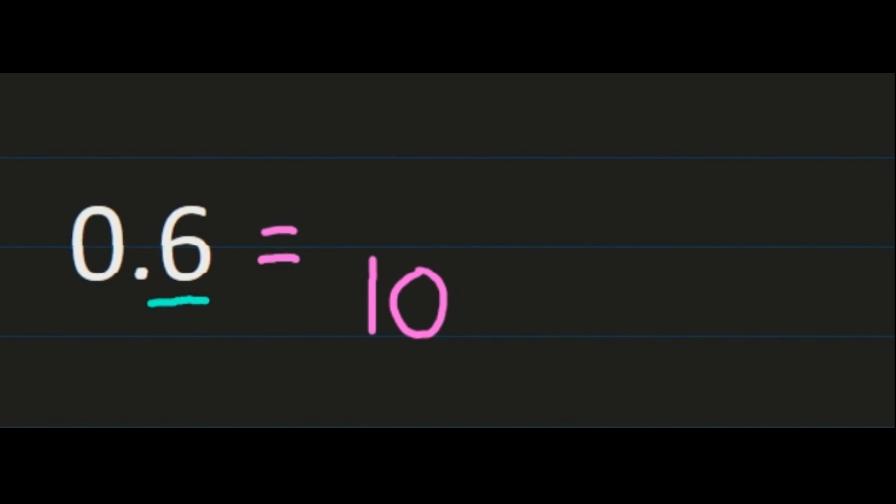The first example is 6 tenths. Let's talk about how you would calculate this. The 6 is in the tenths place, so when turning 6 tenths into a fraction, the denominator is going to be 10. The 6 becomes the numerator. So 6 tenths as a fraction is 6 over 10 — exactly how it sounds.